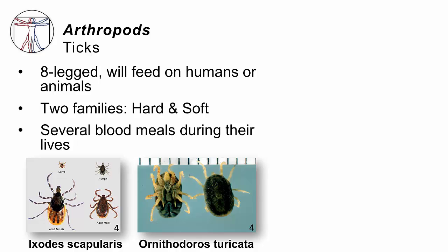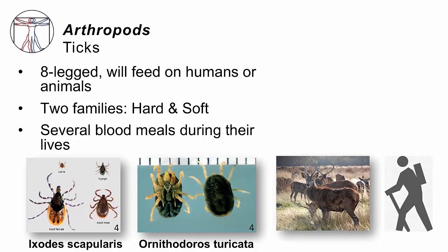Ticks have eight legs and will feed either on humans or animals — they really prefer animals. They're professional hangers-out on grass and will grab onto passing warm-blooded mammals like deer or mice. When humans go into those parts of the wilderness, we can accidentally be bitten. There are two different groups: the hard ticks — you see Ixodes scapularis on the bottom left, the tick that spreads Lyme disease — and Ornithodoros ticks, part of the soft tick family. Either one can serve as vectors of infections.